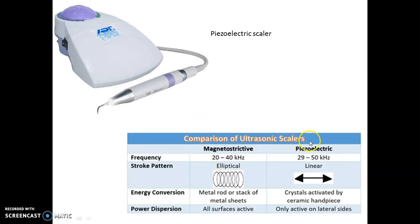Among ultrasonic scalers, they can be magnetostrictive or piezoelectric. Magnetostrictive frequency is 20 to 40 kHz; piezoelectric is around 29 to 50 kHz. The stroke pattern in magnetostrictive is elliptical, whereas in piezoelectric it is linear. Energy conversion in magnetostrictive uses a metal rod or stack of metal sheets, whereas in piezoelectric the crystals are activated by ceramic. Power dispersion in magnetostrictive means all surfaces are active, whereas in piezoelectric only lateral sides are active.